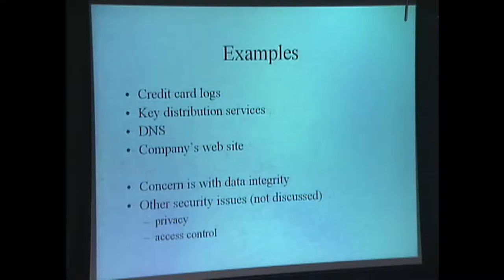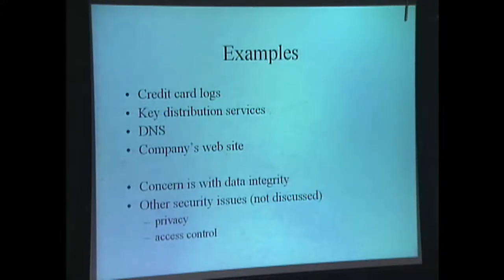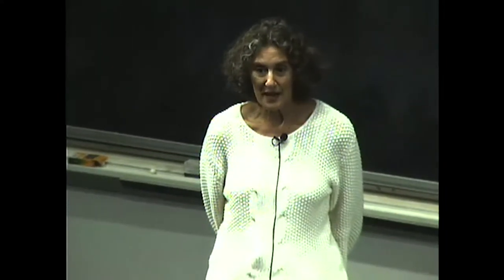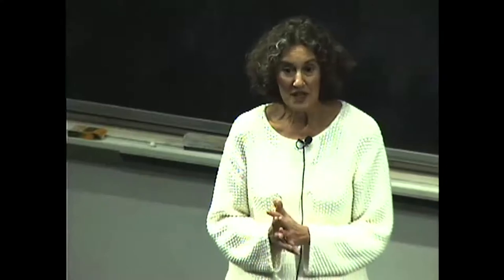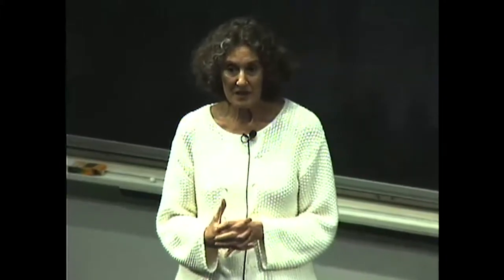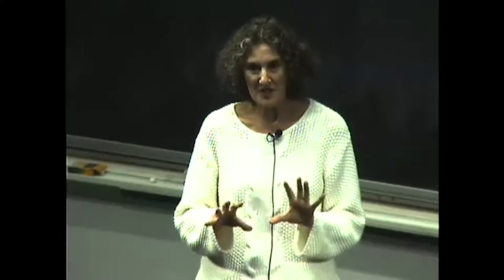Another example is a key distribution service that allows you to look up somebody's name and get back a public key. Yet another example is DNS, the domain name server, which is the source of all addressing on the internet — if DNS name servers are corrupted, you won't be able to find anybody you'd like to talk to. Another example is a company's website: recently the Staples website was hacked and everybody visiting was forwarded to a competitor's website. These problems are becoming increasingly evident, and what you see in the news is just the tip of the iceberg.